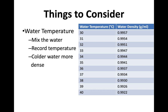One more thing to consider is the actual temperature of the water. The true density of water is not always exactly 1 g/cm³ — as the water gets warmer, the density decreases slightly. So it is actually a little bit easier to float in colder water. You have a reference table for this in your lab manual.